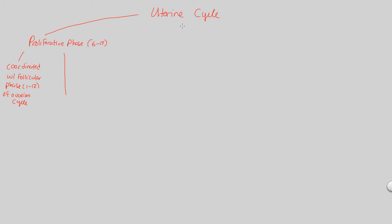What's the purpose of this part of the uterine cycle? Here what we notice is that ovarian hormones — hormones that come as a result of the ovarian cycle from days 1 through 13 — actually stimulate the uterus. This causes a preparation to begin. The uterus is going to prepare for a possible embryonic implantation that may occur if fertilization occurs.